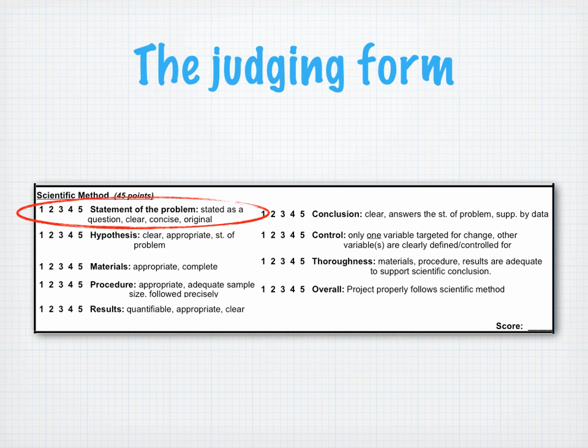For example, note this element, statement of problem. Consider: is the problem stated as a question? Is it clear? Does it try to account for just one variable? Is it an original question? A project that covers all those criteria in a strong way would receive a five. A project that represents a true statement of the problem but is lacking in one or two other criteria could receive a four. A project that is a true statement of the problem but lacks all other aspects could receive a three.